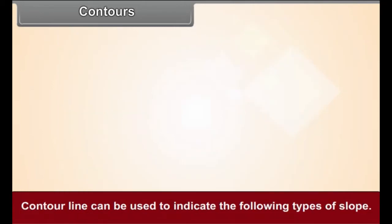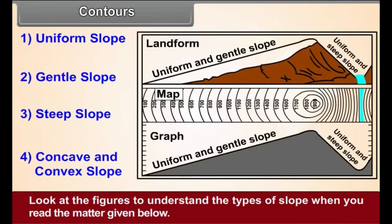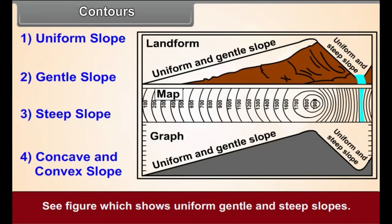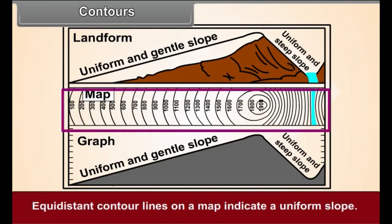Contour lines can be used to indicate the following types of slope. Look at the figures to understand the types of slope when you read the matter given below. See figure 2.3 which shows uniform gentle and steep slopes. 1. Uniform slope. Equidistant contour lines on a map indicate a uniform slope.